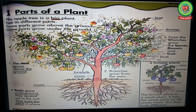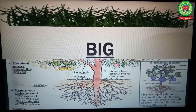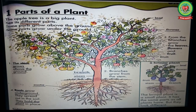Now children, open your science book, lesson 1: Parts of a Plant, page number 3, and let's start reading. 'The apple tree is a big plant.' Underline the word 'big' and write down its meaning: large. As we see many plants in our surroundings, some plants are big and some plants are small.